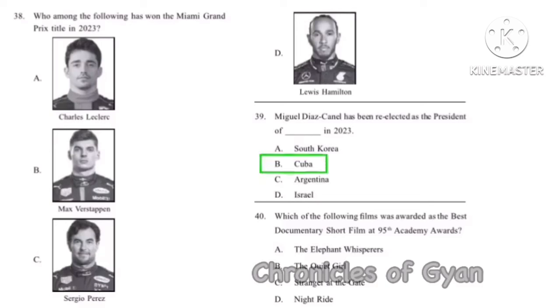Question 40: Which of the following films was awarded the Best Documentary Short Film at the 95th Academy Awards? The correct answer is Option A, The Elephant Whisperers.